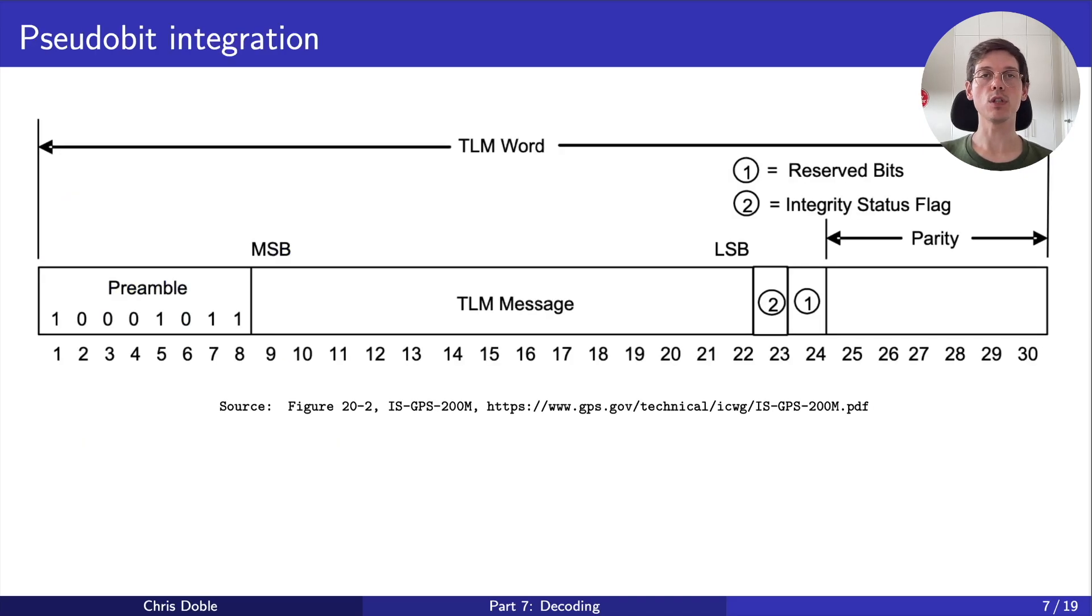This image was taken from the GPS specification, and it shows the structure of the first word of each subframe, which is called the telemetry word, or TLM word. On the bottom, we have bit numbers, and above, we have parameter names. You can see that the first 8 bits are fixed. This is the preamble. We look for this sequence within our pseudo-bits to tell us how they map to binary bits.